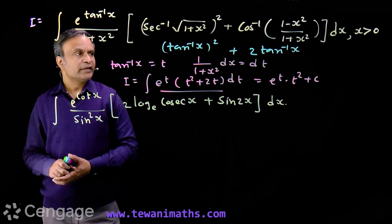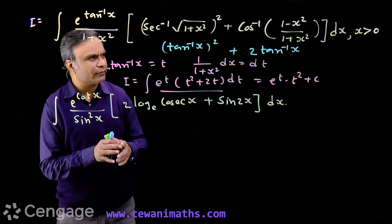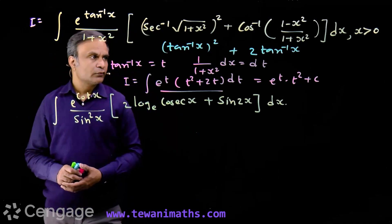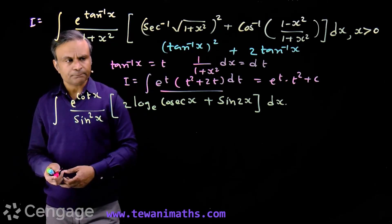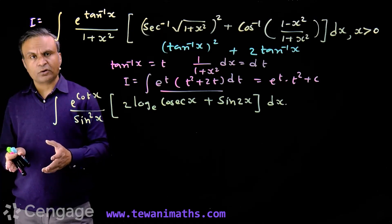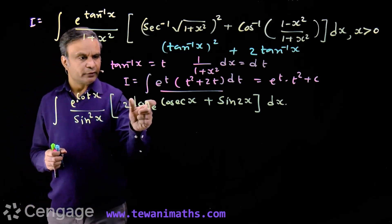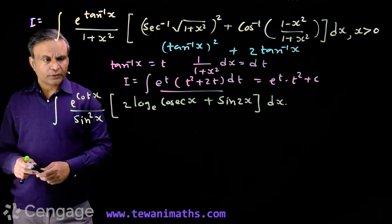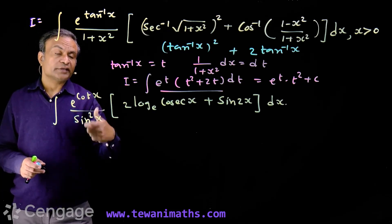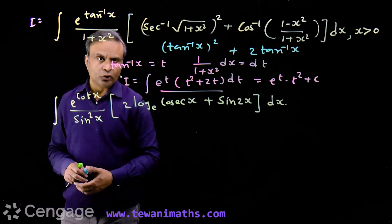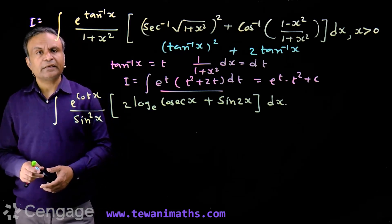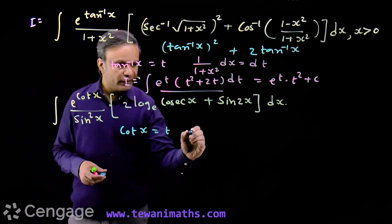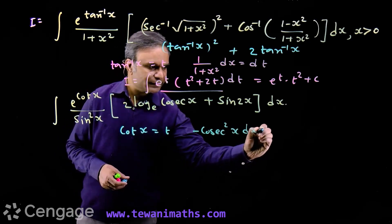This is a very nice question — we use elementary formulas of inverse trigonometric functions to identify the correct substitution, tan-inverse x to t. Now look at the next integral: we have the integration of e raised to cot x over sin²x, multiplied by the bracket (2 log cos x plus sin 2x). One over sin²x is cosec²x, and cosec²x is the derivative of minus cot x. So the substitution will be cot x equal to t, giving minus cosec²x dx equal to dt.